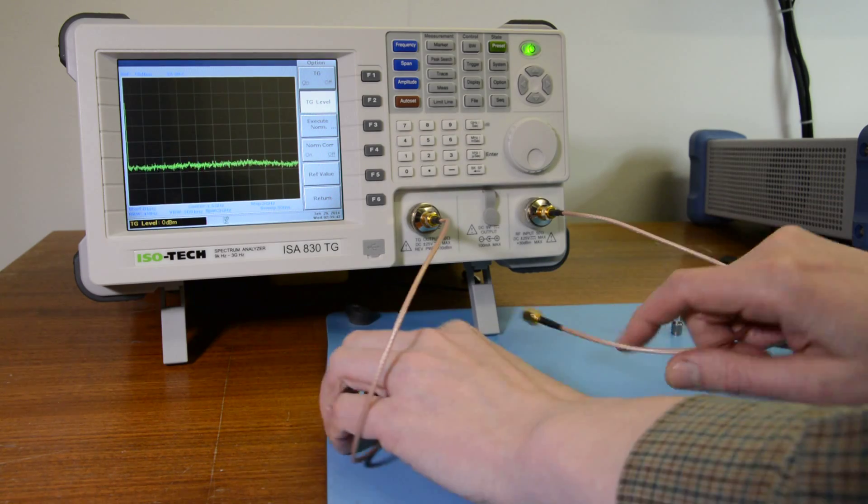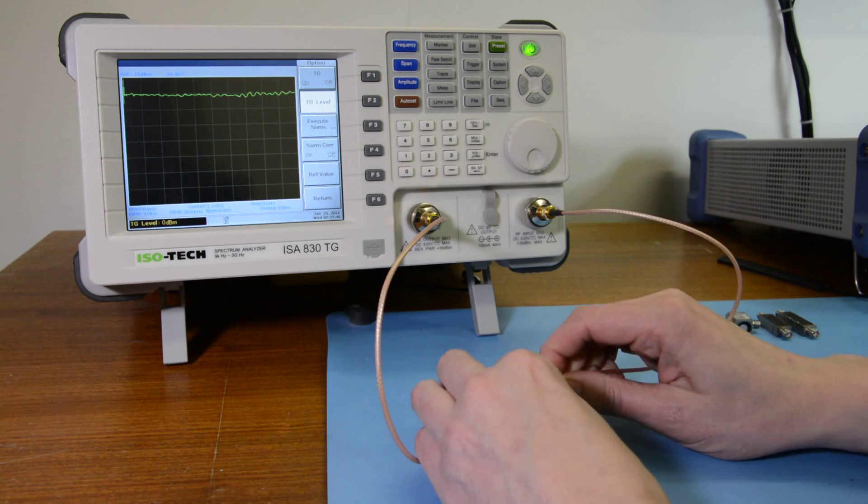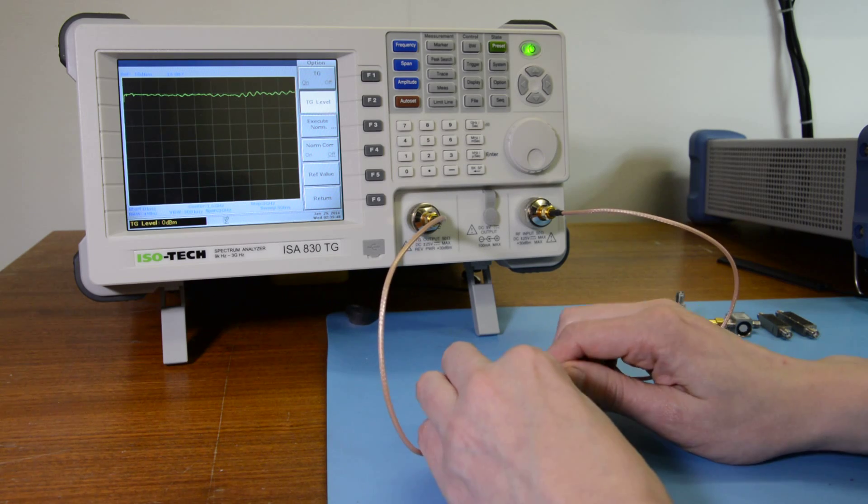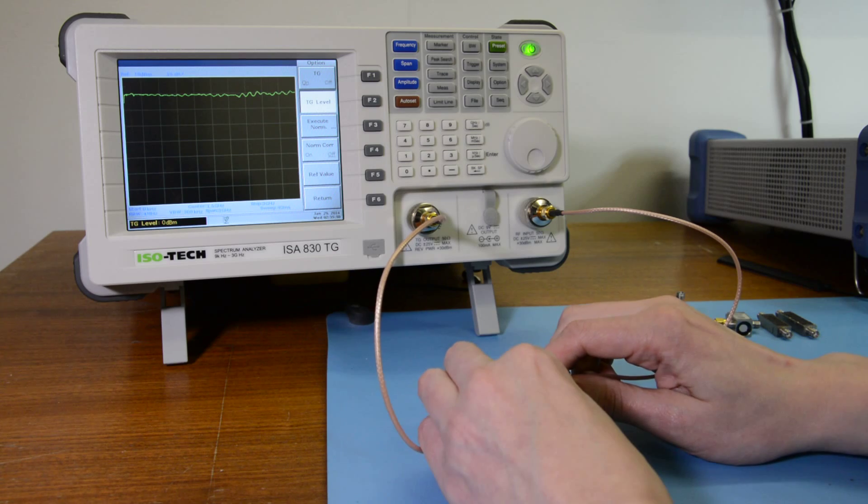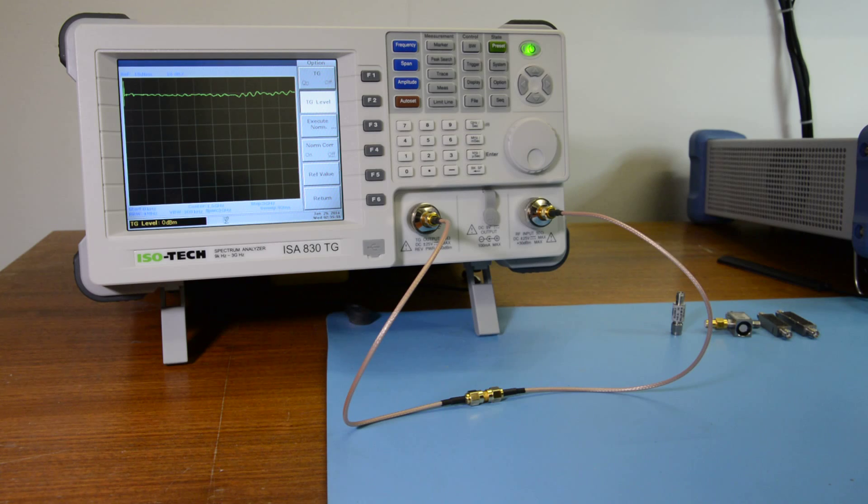So if we connect the output of the tracking generator to the RF input on the analyzer, we can see that we've got a sweep there across all the way from 0 to 3 GHz and at around 0 dBm.